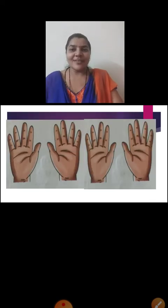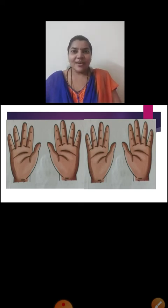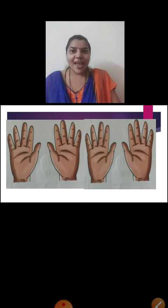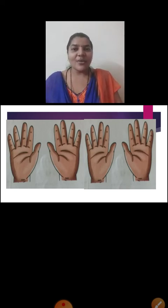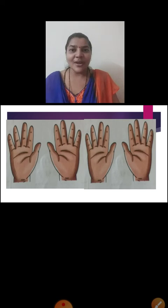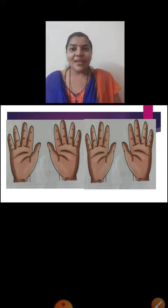Now, children, tell me how many hands you all can see? Yes, we can see here 4 hands. And how many fingers you all can see here on the screen? Yes, we can see here 20 fingers. So in the previous picture we saw 10 fingers and now here we can see 20 fingers. Means here we have increased the number by adding 10. When we keep on increasing the number by adding 10, it is called groups of 10.